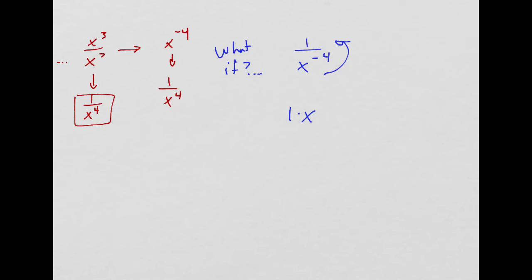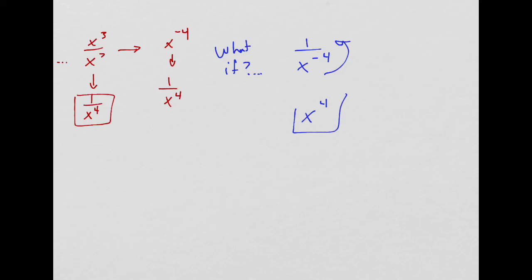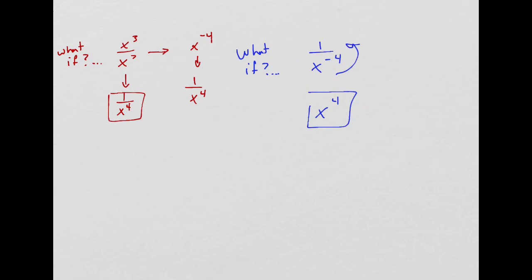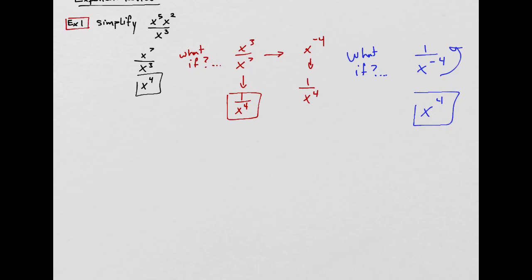You could say 1 times x to the 4th over 1, but you actually don't need either of those 1's. You can write it down, it's not wrong, but there you go. These are the same thing, and it's important to remember. Alright, that's example 1.